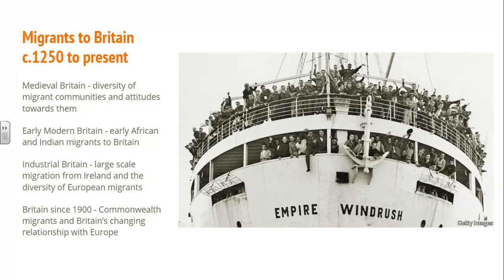We move through this period chronologically. We look at medieval Britain and groups like the Jewish community, the Dutch and the Belgians. Then we move on to the early modern period, with early African settlers and Indians coming to this country. In the 19th century, industrialisation brings more Indians, Chinese, and Africans, alongside large numbers of Irish people and people from Eastern Europe. Finally, we look at the 20th century right up to the present day — Britain's relationship with Europe, people who came to escape the World Wars, right up to the arrival of people from the Commonwealth, including the Windrush generation and those who came here in the 1980s.